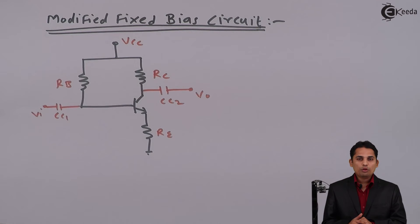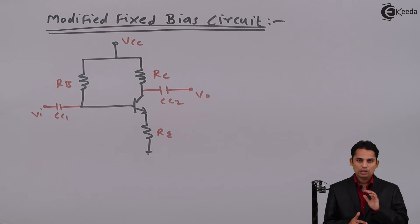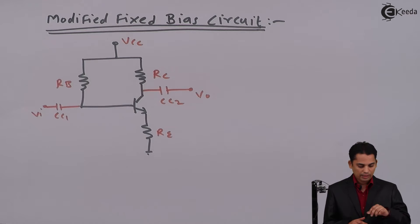In order to perform DC analysis, what we need to find out is: Step 1 — find out base current; Step 2 — find out collector current; and Step 3 — find out collector-to-emitter voltage. The steps will remain the same — only the circuit is modified and hence the equations will change.